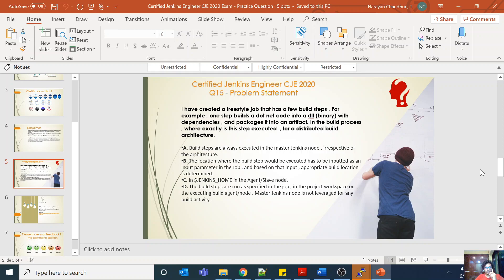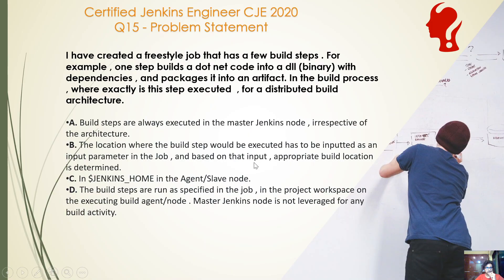Welcome back to the CJE 2020 certification catalyst series, question number 15. I have created a freestyle job with a few build steps. For example, one step builds a .NET code into a DLL, packages it into an artifact in the build process. This step is executed for a distributed build architecture — I have one master node doing coordination and slave nodes (Windows, Linux, etc.) doing the actual build. So where is this build step executed?